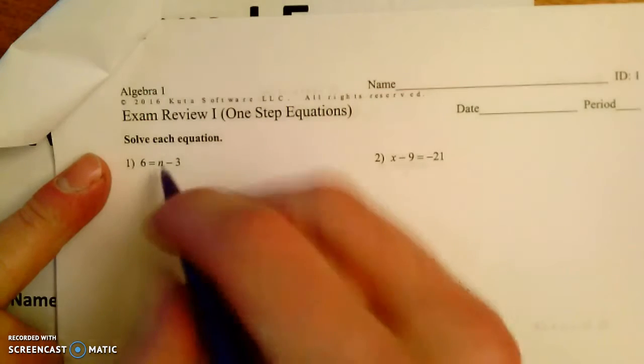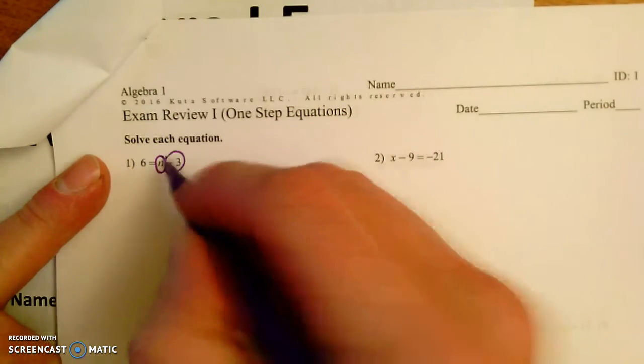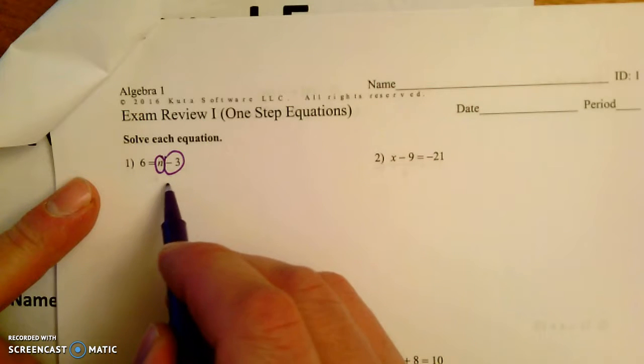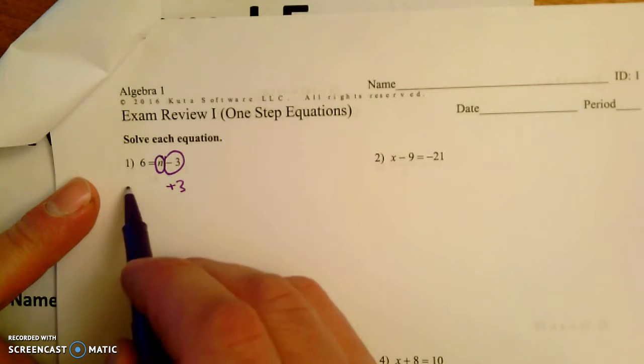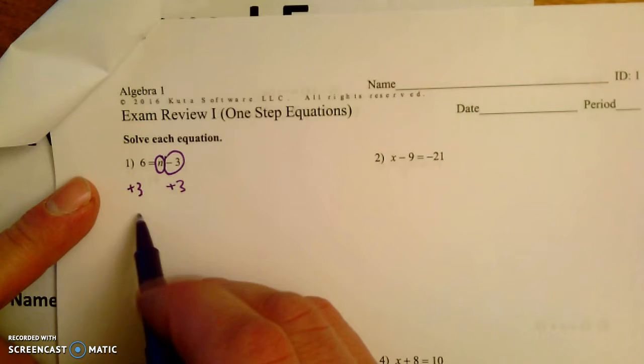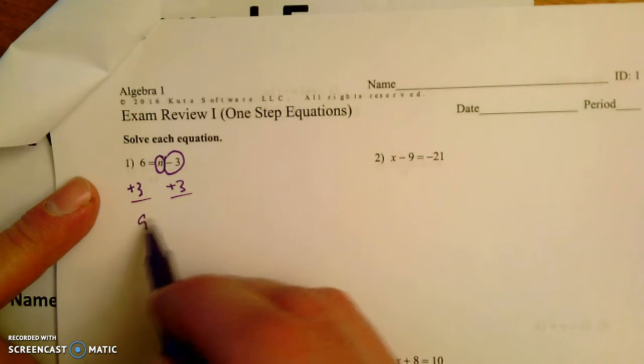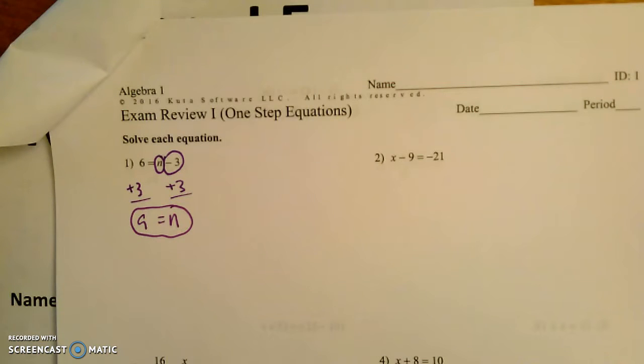So if I look here, here's our variable n and it's got this negative 3 that we don't want with it. So to get rid of that, we're going to add 3. To cancel out that negative 3, of course you have to add 3 on the other side as well. That gives us 9 equals n. I'm going to go ahead and circle your answer. You're done. Pretty straightforward.